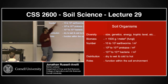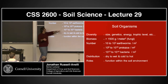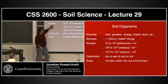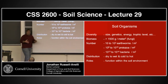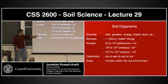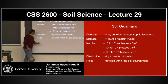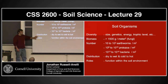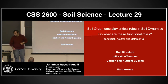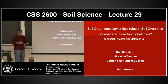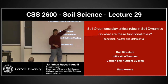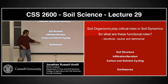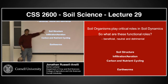Here's where they are — dry versus wet, cold versus hot — and what they actually do in the system. Let's think of them as functional relationships. These soil organisms play critical roles: their functions can be beneficial, neutral, or detrimental. We're going to look at a model system — earthworms — and examine three things: soil structure, infiltration and aeration, and carbon and nutrient cycling.